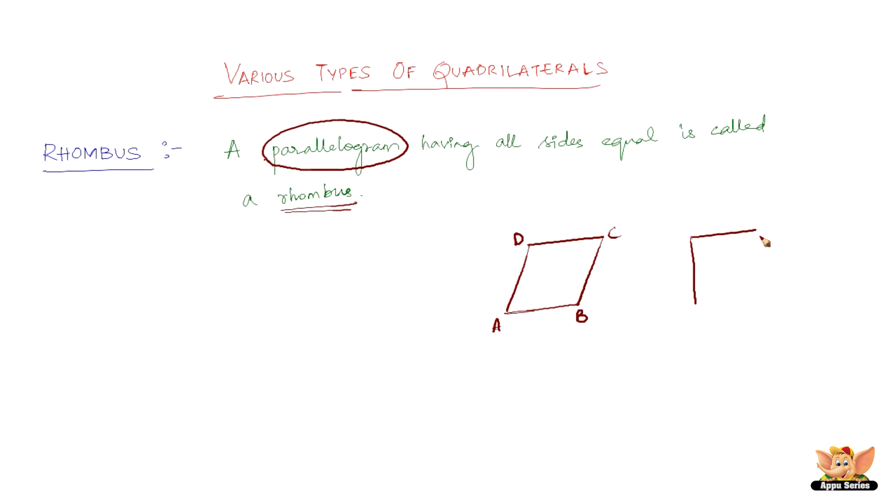Yes, a square is also a rhombus because opposite pairs of sides are parallel to each other and they are also of equal length. So it is a rhombus, but all the rhombuses are not squares, but all the squares are rhombus. So this is called as a rhombus.